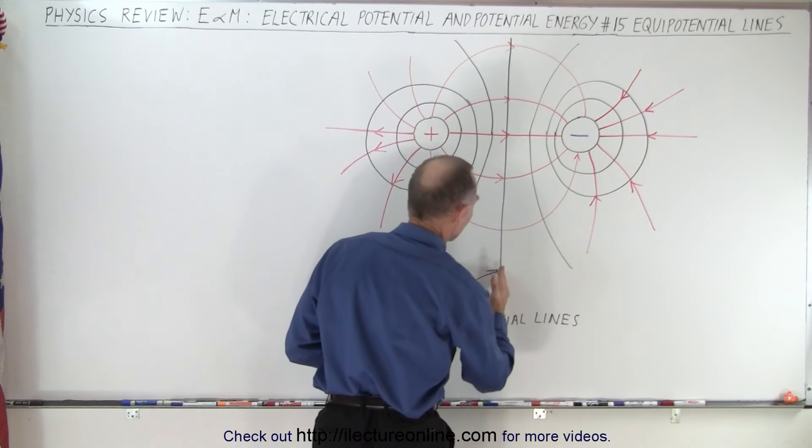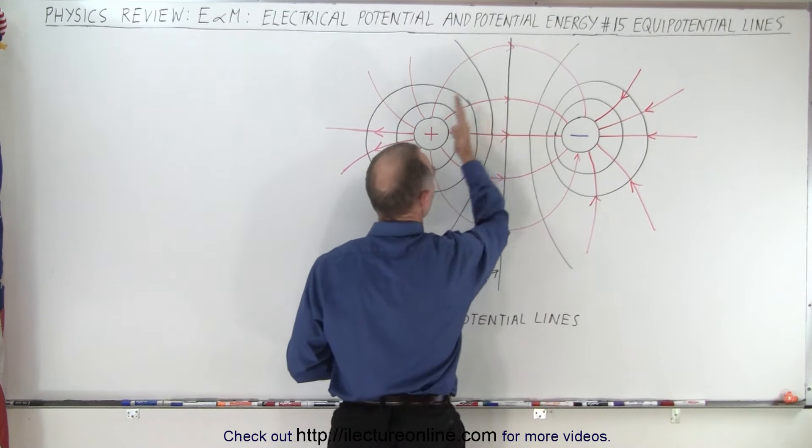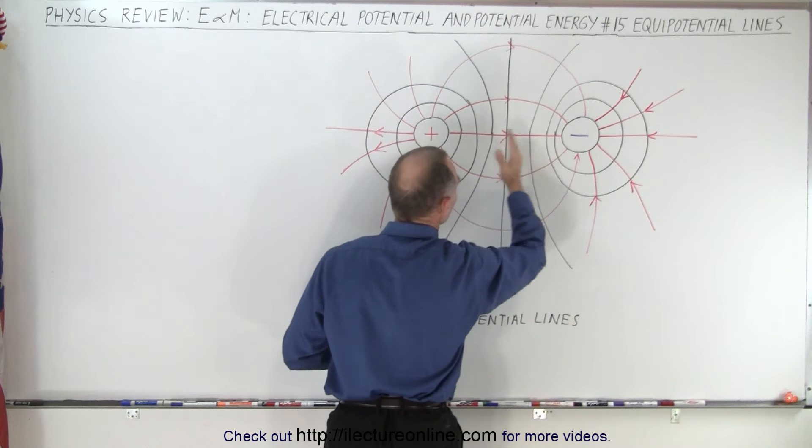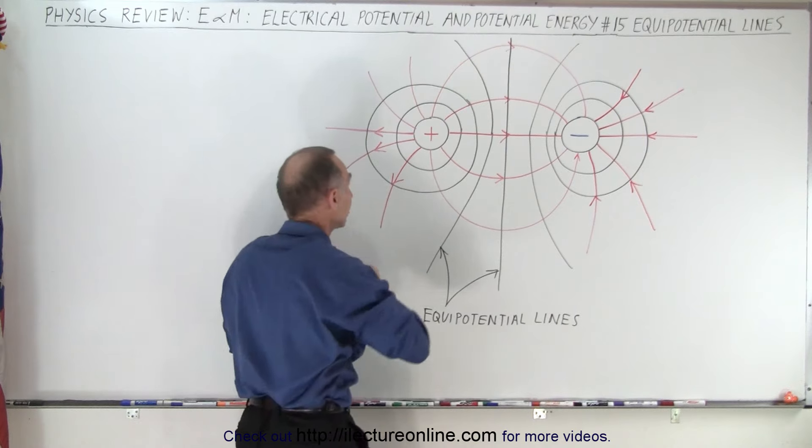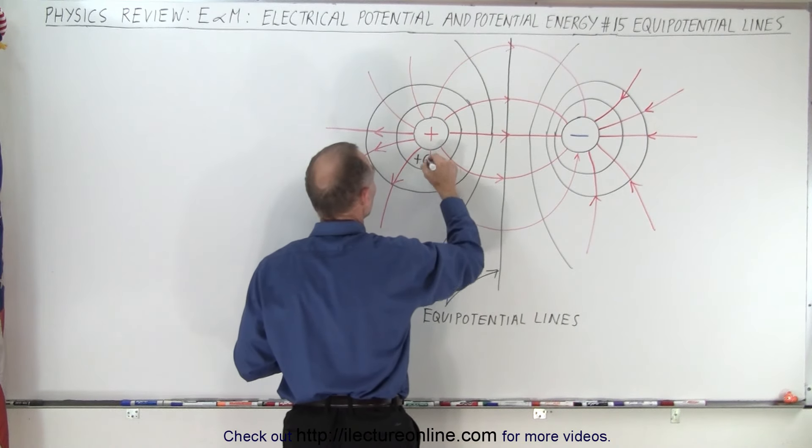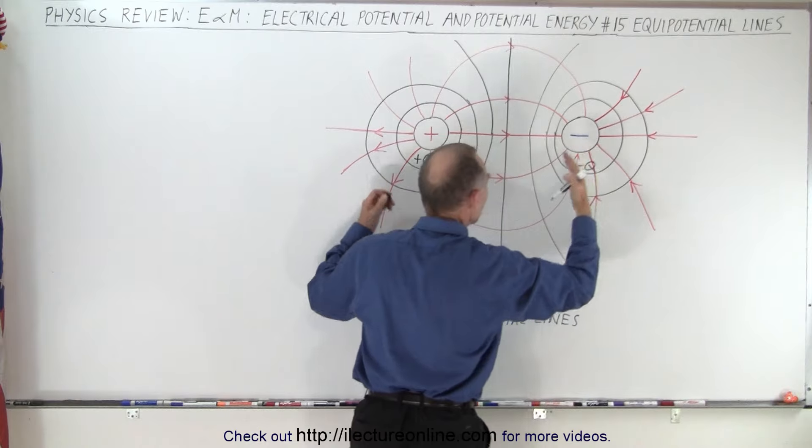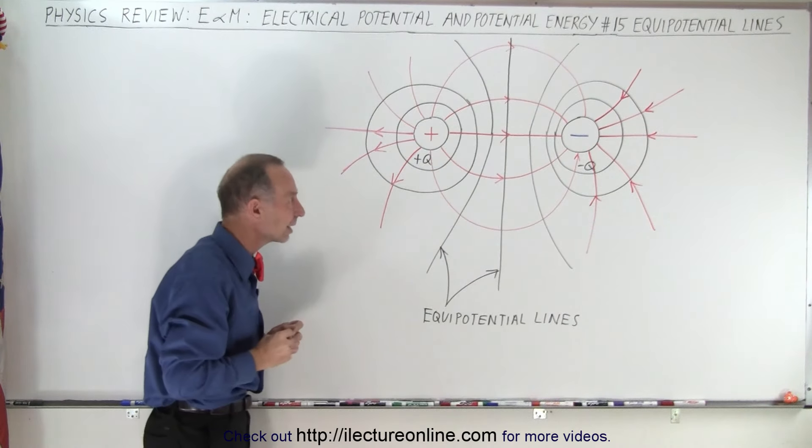So you can see here that if you cut across this way, halfway between these two charge objects, assuming that they both have the same amount of charge but opposite in sign, so maybe we'll just call this plus Q and call this negative Q to indicate that they have the same amount of charge, opposite in sign.